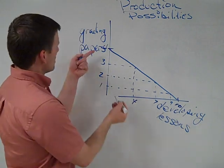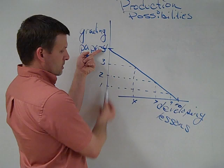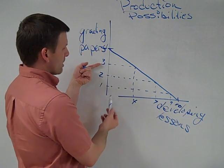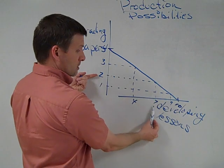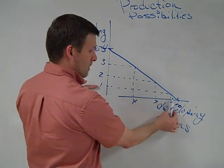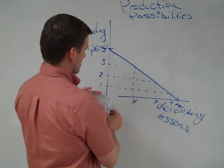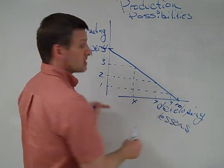So I've got some interesting combinations. Four papers, zero lessons. Three papers, four lessons. Two papers, seven lessons. One paper, nine lessons. And then zero papers and ten lessons.